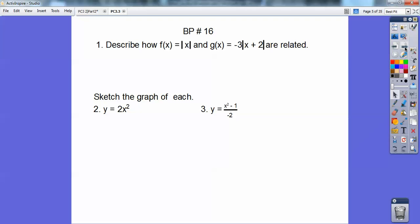Okay, so let's do the board problem first, number 16. Describe how f of x equals the absolute value of x and g of x equals negative 3 times the absolute value of x plus 2 are related.